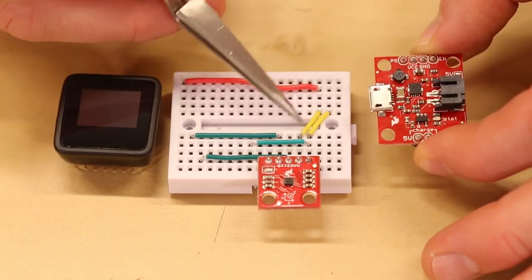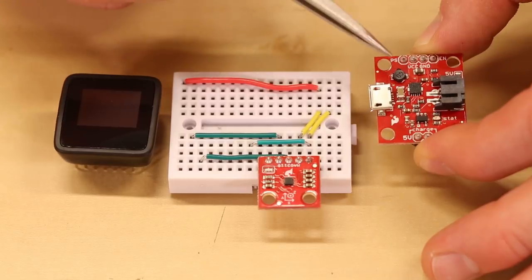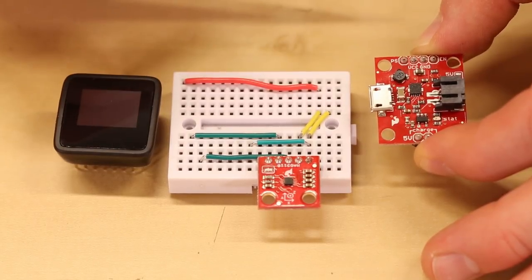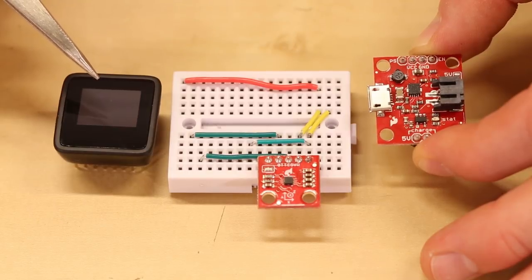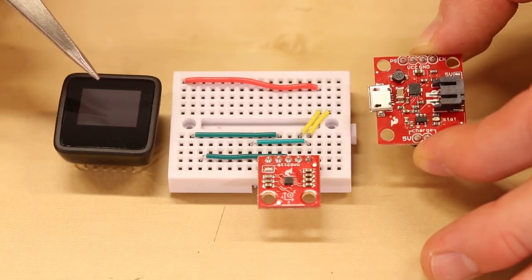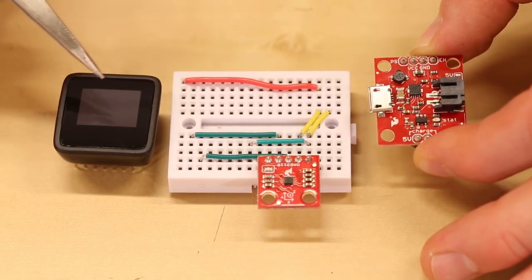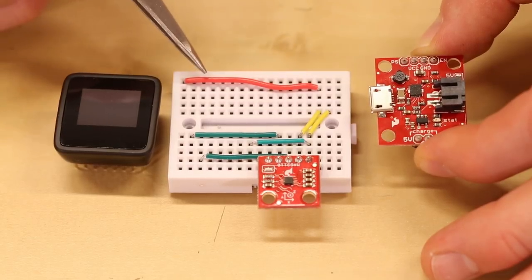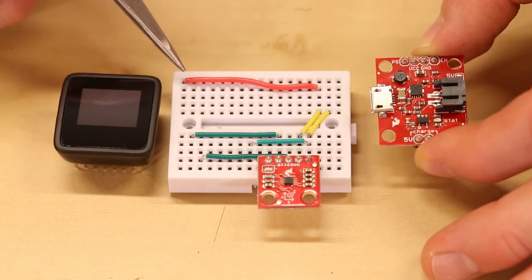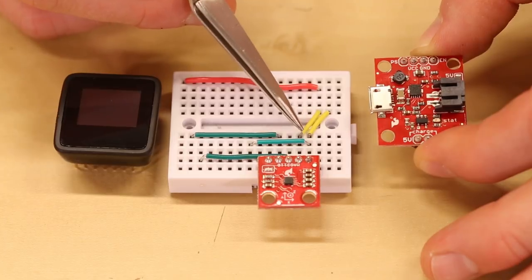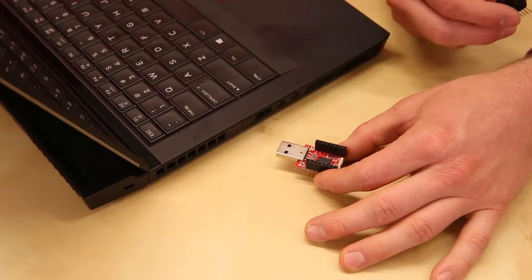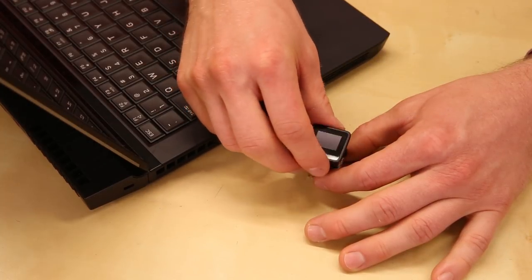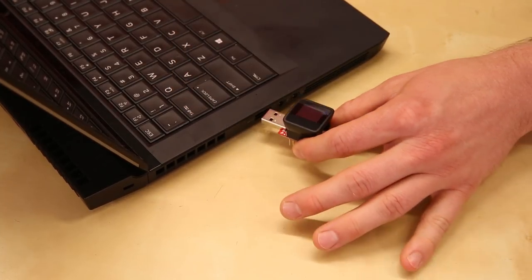I'll connect VCC and ground to a power cell board that converts LiPo voltage to 3.3 volts. We'll use a microview as the main processor and display, but we'll need to program it first. I'll connect 3.3 volts from the power cell to the microview's VIN, and likewise with ground. I'll also connect I2C SCL and SDA from the magnetometer to the microview. Plug the microview into a programmer, and plug that into a USB slot in your computer.